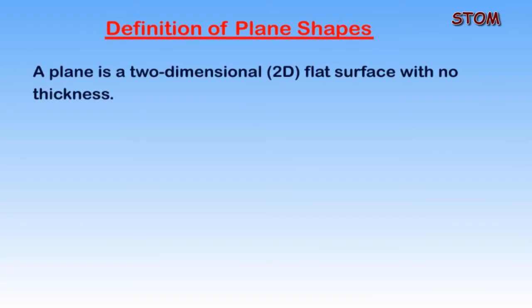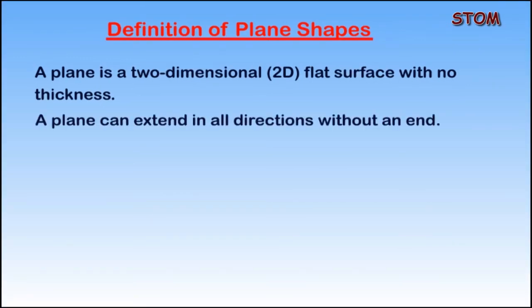A plane shape is a two-dimensional flat surface with no thickness. A shape of this characteristic is simply called a 2D. It can also be said to be a plane if it can extend in all directions without an end.